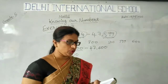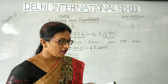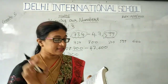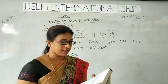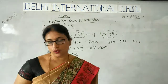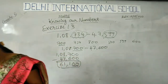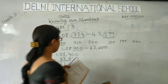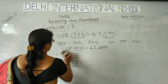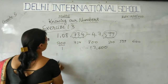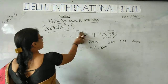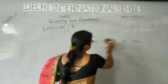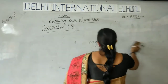Like this you have to do. So next, the third way: estimate the following products using the general rule. Products means multiplication. That is the third way.